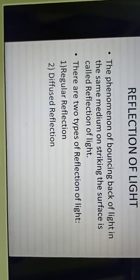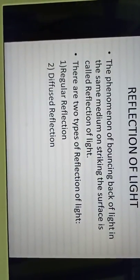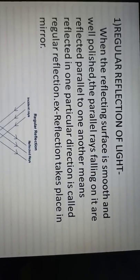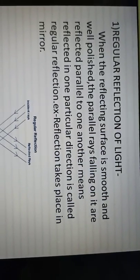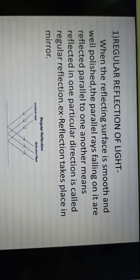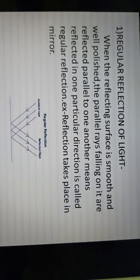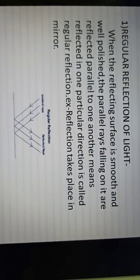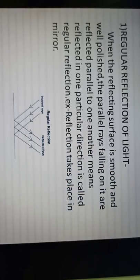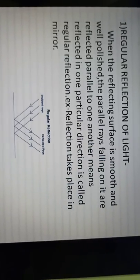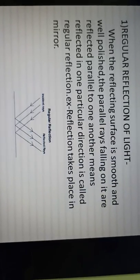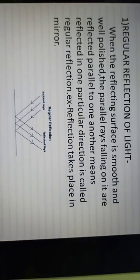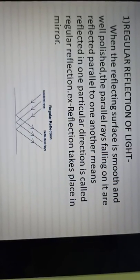This reflection takes place in two ways. The first way is regular reflection. Regular reflection of light means when the reflecting surface is smooth — like a mirror or any plane surface. Silver metal is the perfect reflector. When the reflecting surface is smooth and well polished, the parallel rays falling on it are also reflected parallel, and the reflection takes place in one particular direction. This type of reflection is called regular reflection.